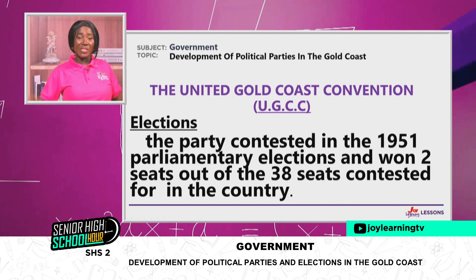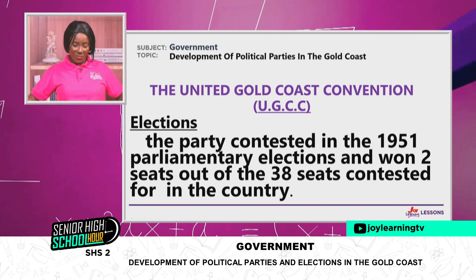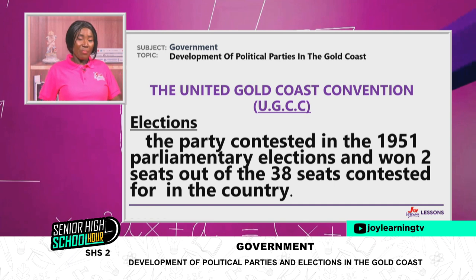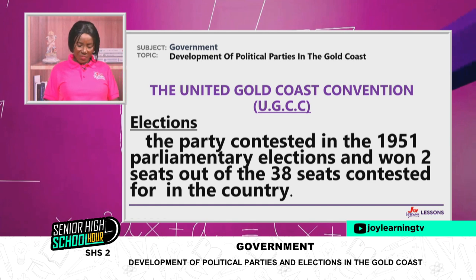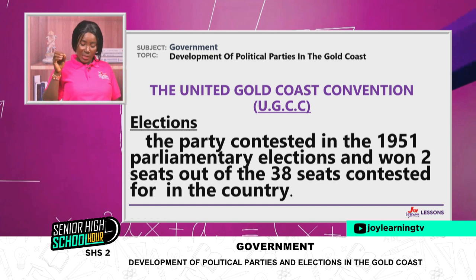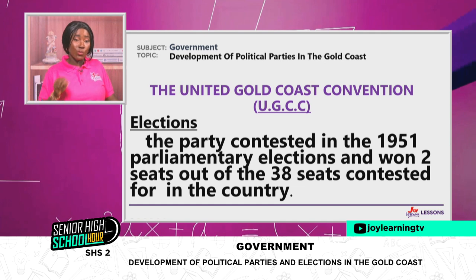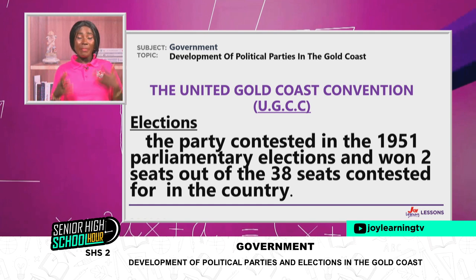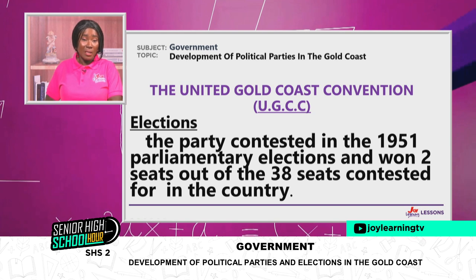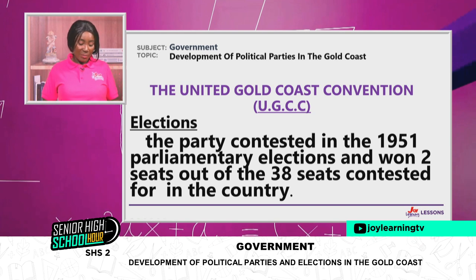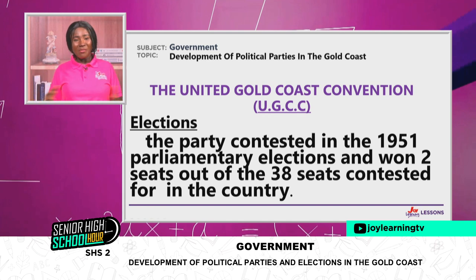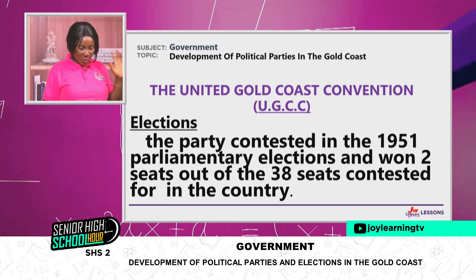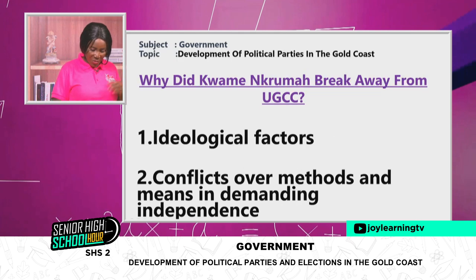They went for elections in 1951. Based on the Coussey Committee, out of 38 seats, UGCC won only two. Remember that it was the Legislative Council that permitted elected members — that is parliamentary elections — and UGCC got only two. That was the downfall of the party, and people began to move away.